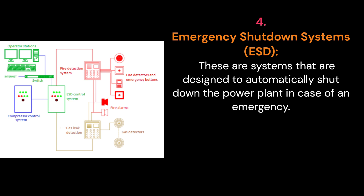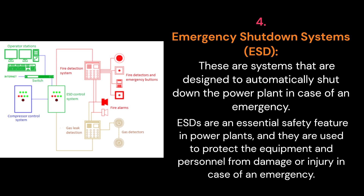4. Emergency Shutdown Systems, ESD. These are systems that are designed to automatically shut down the power plant in case of an emergency. ESDs are an essential safety feature in power plants, and they are used to protect the equipment and personnel from damage or injury in case of an emergency.